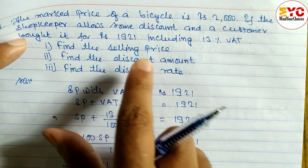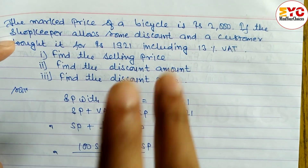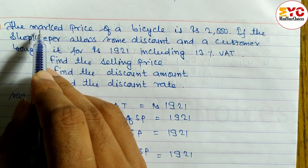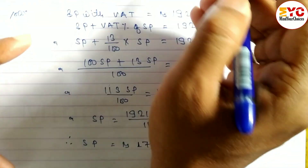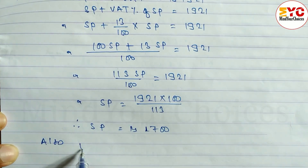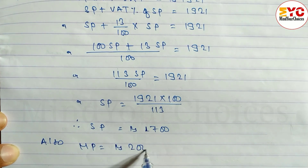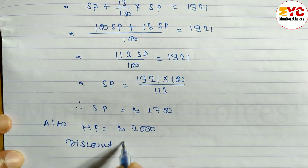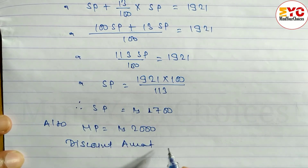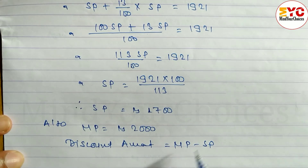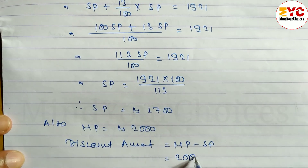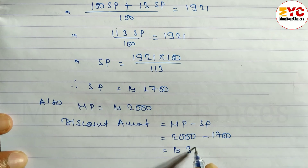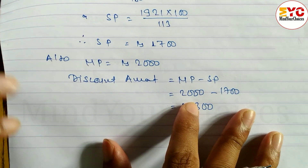Now we have to find the discount amount. To find discount amount, we use the formula: MP − SP. MP is already given in the question — the mark price of the bicycle is Rs. 2000, so MP = 2000. Discount amount = MP − SP = 2000 − 1700 = Rs. 300.